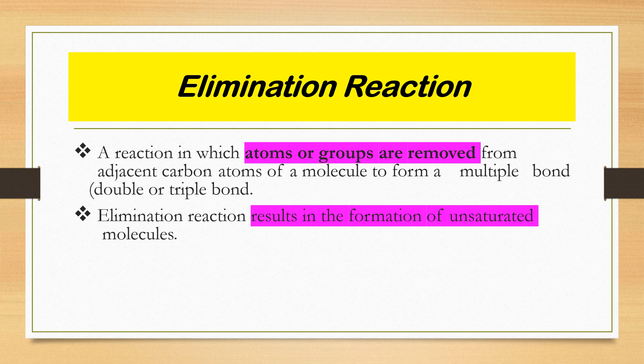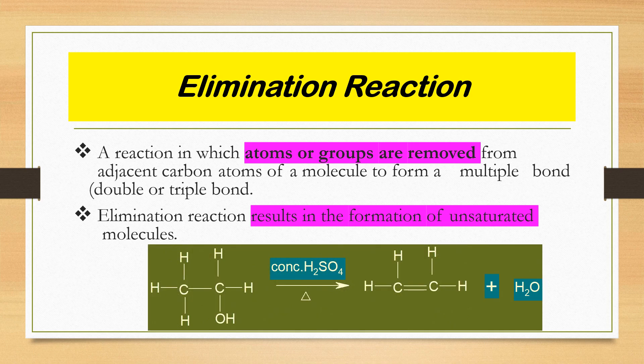The last type is elimination reaction. In elimination reactions, atoms or groups of atoms are removed from adjacent carbon atoms of a molecule, forming a multiple bond — either double or triple. Elimination reactions result in the formation of unsaturated molecules. Elimination is essentially the reverse process of addition: while addition goes from unsaturated to saturated, elimination goes from saturated to unsaturated.